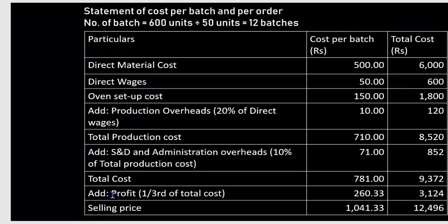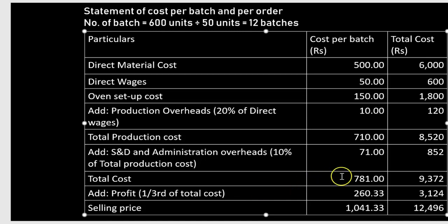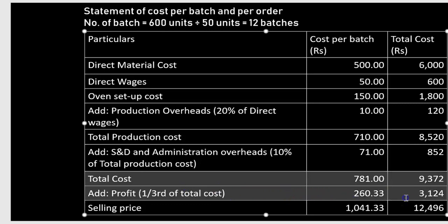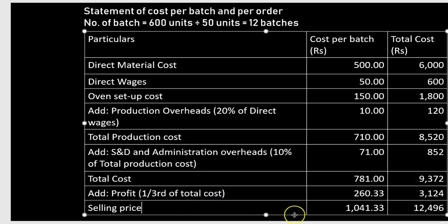We add profit at one-third of total cost (33.33%). Per batch: 781 × 1/3 = rupees 260.33, and for the full order: 260.33 × 12 = rupees 3124. Adding total cost and profit gives the selling price: rupees 1041.33 per batch and rupees 12,496 for the entire order of 600 muffins.